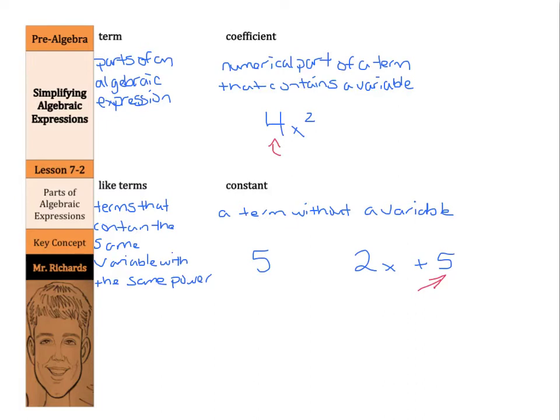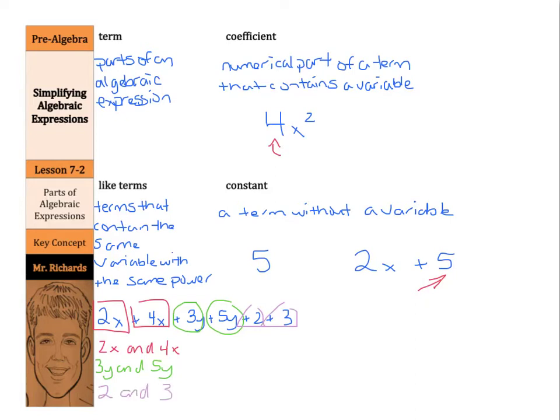If we have 2x plus 4x plus 3y plus 5y plus 2 plus 3, a couple different groups here. So, 2x and 4x would be like terms together. Separately, then, you'd have 3y and 5y. So, 3y and 5y would be like terms. And then, separate from that, we would have plus 2 and plus 3. So, we would have 2 and 3. We'd have 3 different sets of like terms.